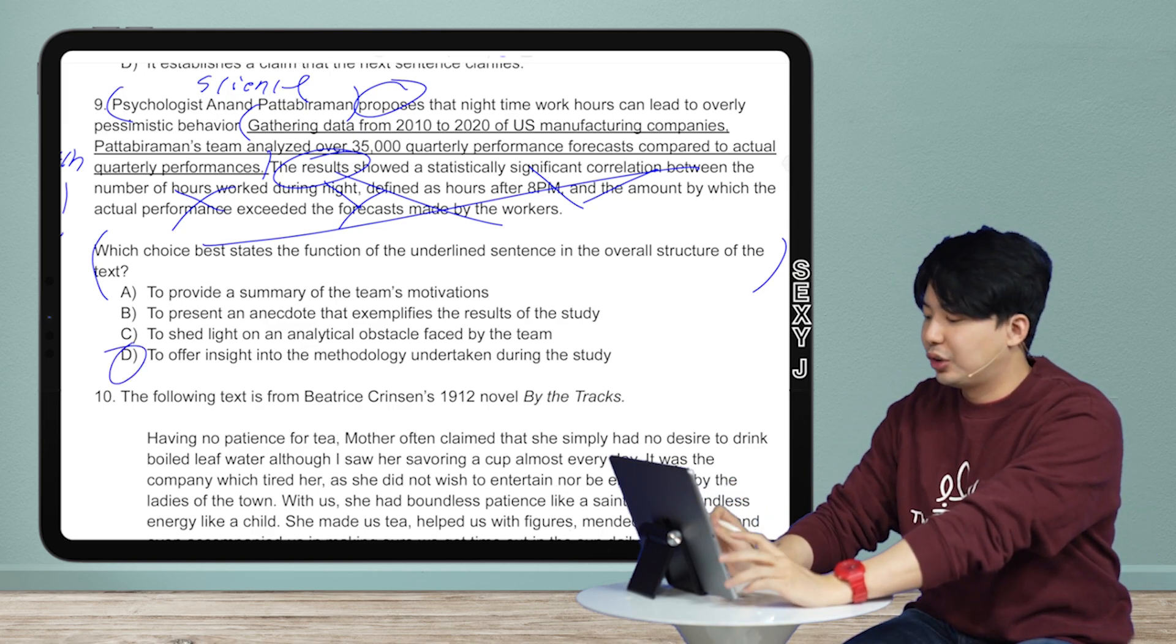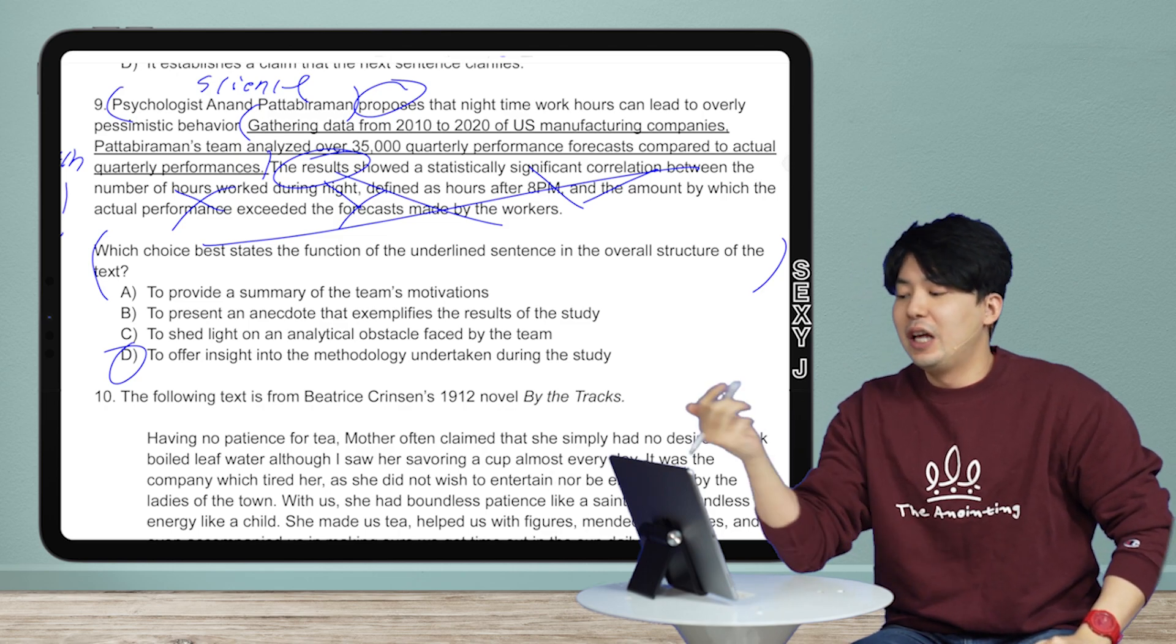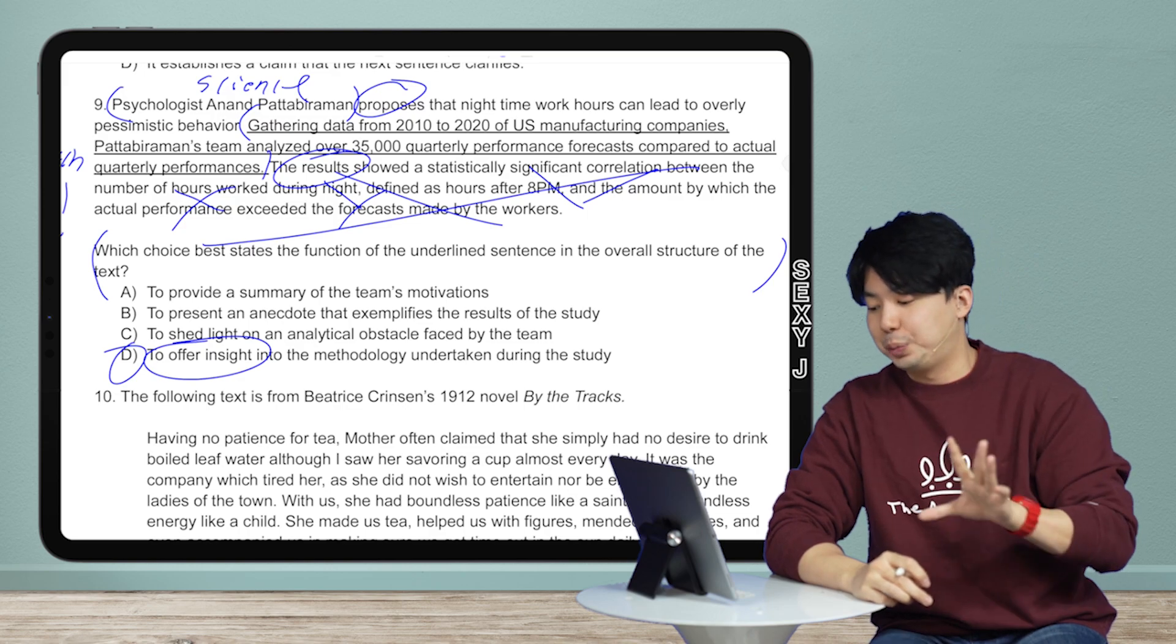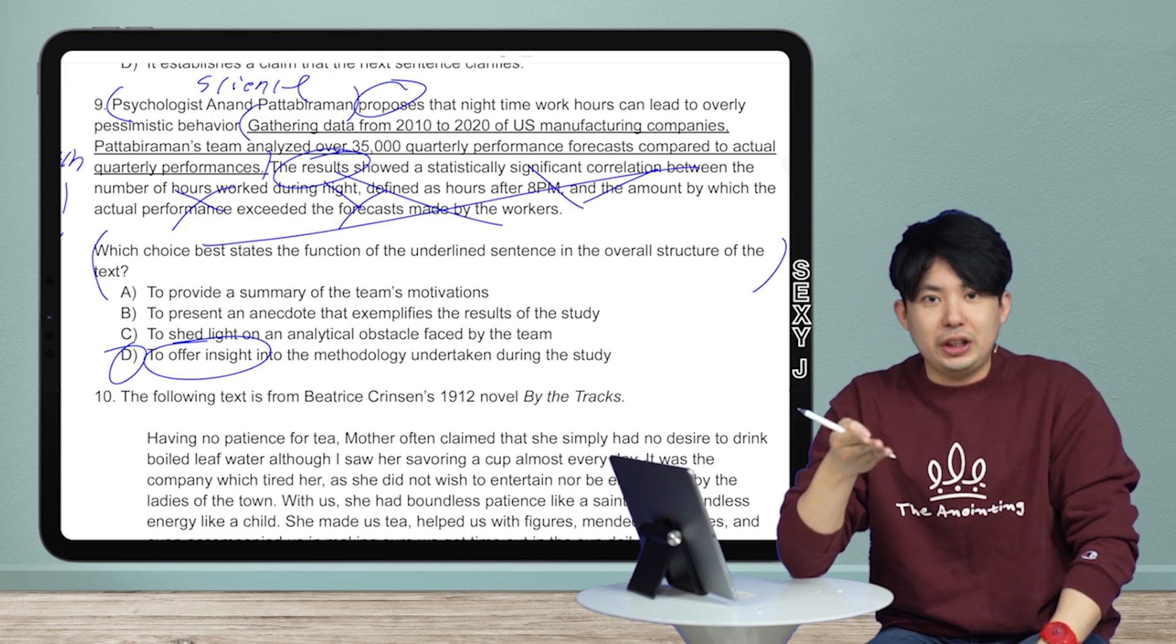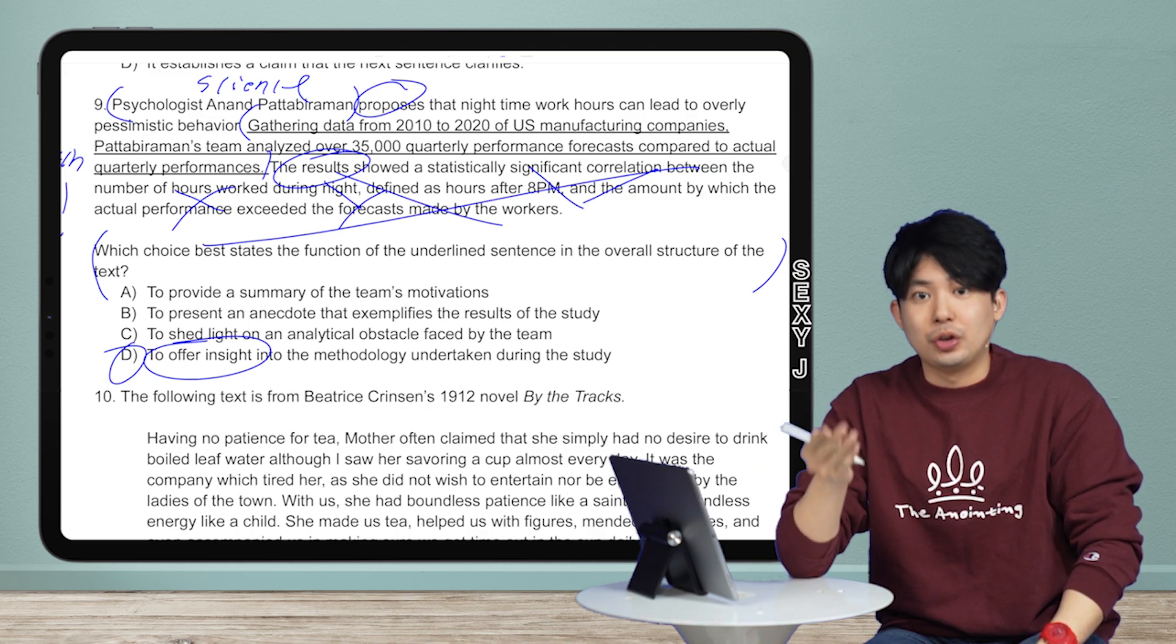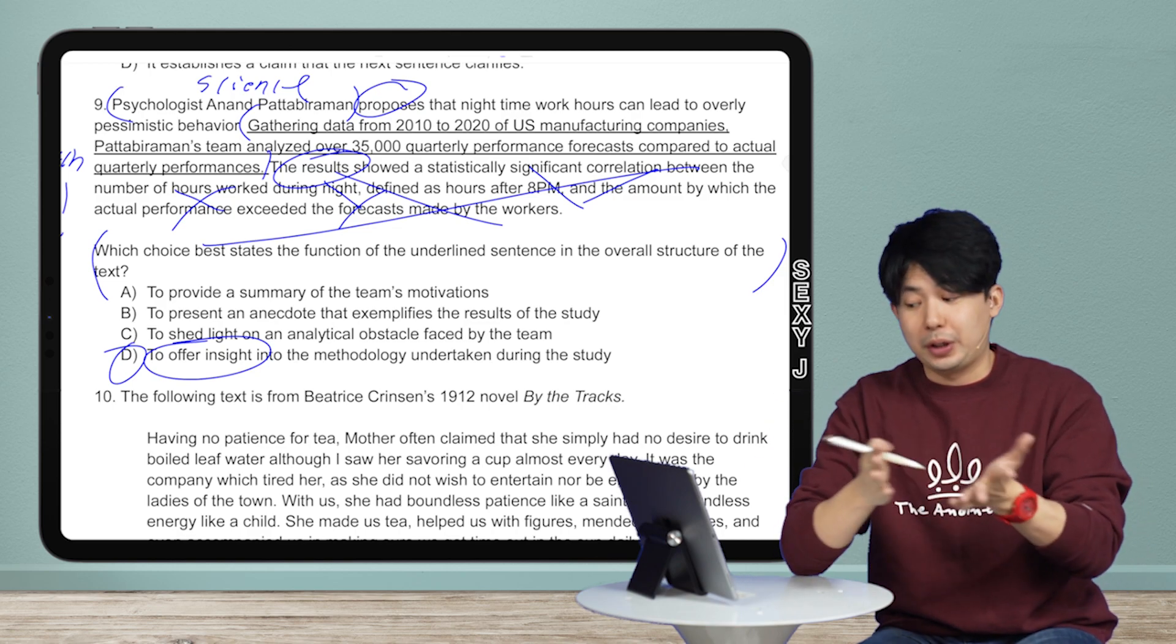So the answer here is D. I'll cut to the chase. To offer insight into the methodology undertaken during the study. This phrasing. I love this phrasing. Actually, I would hate it if you guys use it in English class, but for SAT, I love it. So offer insight. That just means tell us stuff. Every single thing is giving us information. Offer insight. Give us information. Reveal something. All of those are great.